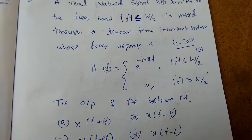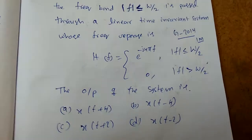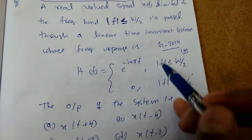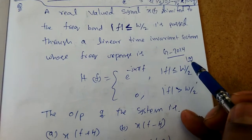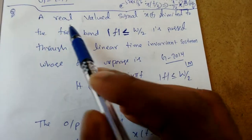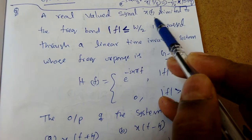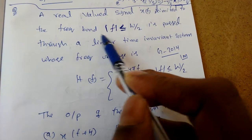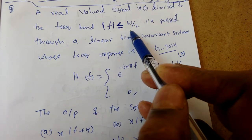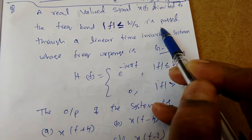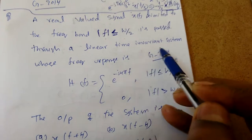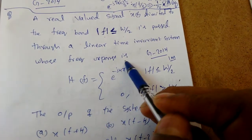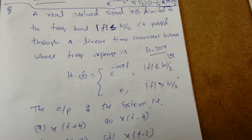In this lecture we will do some more problems on Fourier transform which came in GATE 2014. A real valued signal x(t) limited to the frequency band |f| ≤ ω/2 is passed through a linear time invariant system whose frequency response H(f) is given.